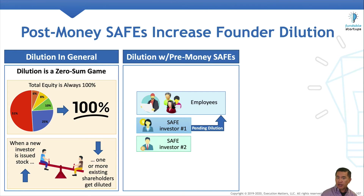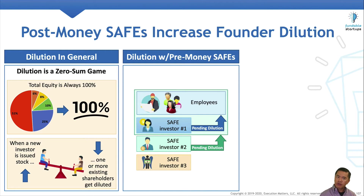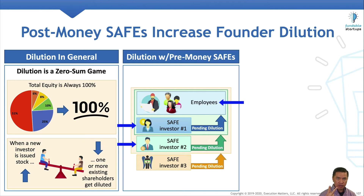Sometime later, the founders close their second safe, which results in the impending dilution of all existing stakeholders — which at this time are the employees and safe investor number one. Sometime later again, the founders close their third safe, which results in the impending dilution of all existing stakeholders — which at this time are the employees, safe investor number one, and safe investor number two.